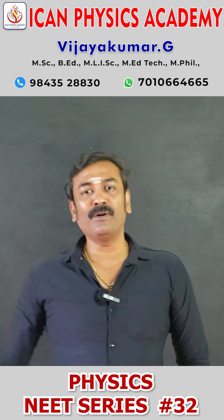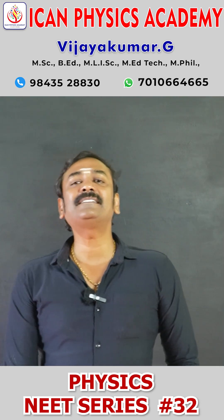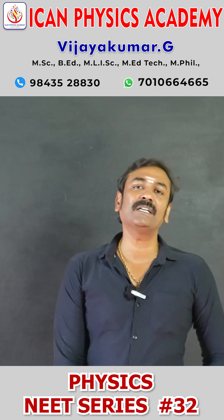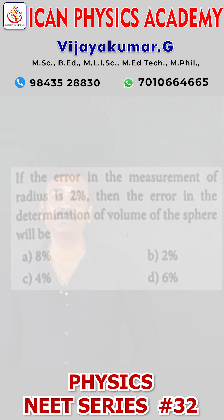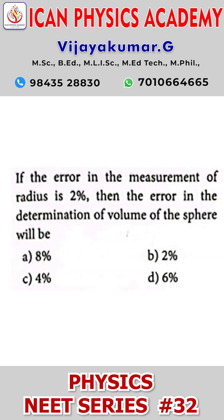Abna, Need series, Question number 32. If the error in the measurement of radius is 2%, then the error in the determination of volume of the sphere will be?